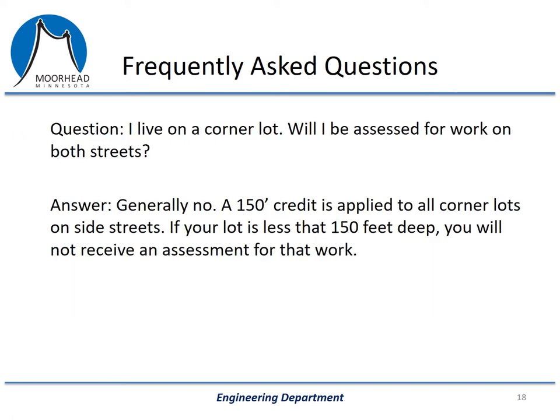I live on a corner lot — will I be assessed for work on both streets? We will run into this situation on this project. The answer is generally no. We apply a credit to corner lots, so generally you're only paying for the street on one side of you. It's a 150-foot credit on corner lots. If your lot is less than 150 feet deep, then you don't receive an assessment for the work on that street. You will still have an assessment for the other street.